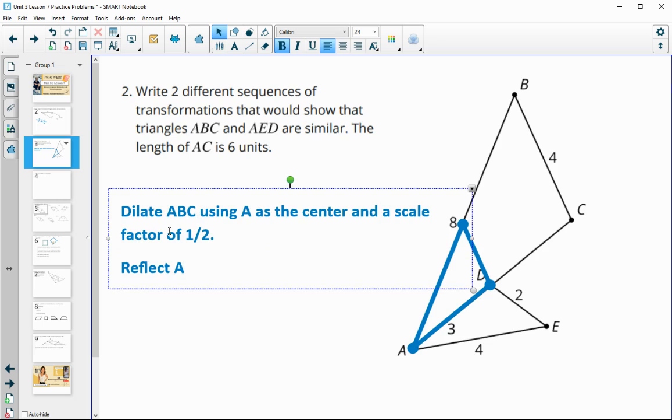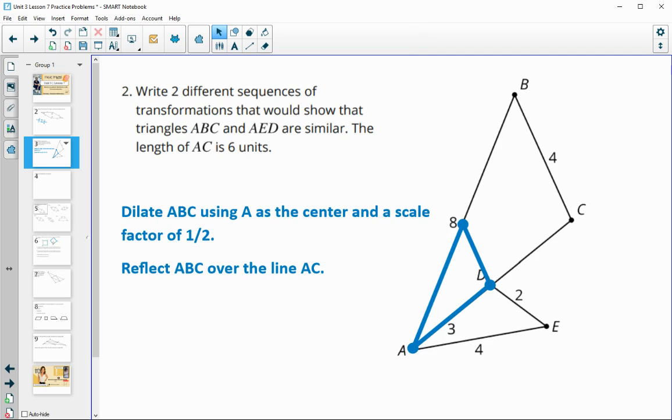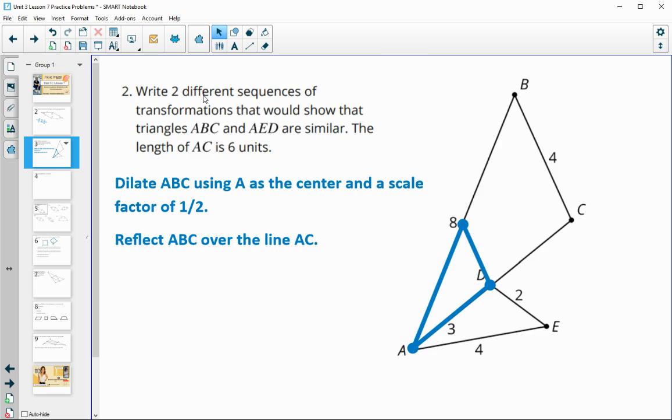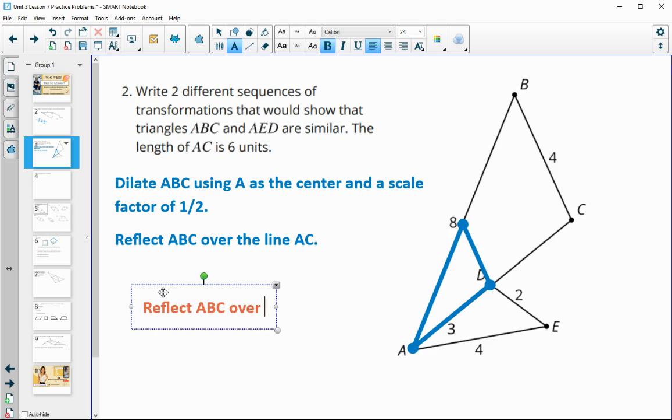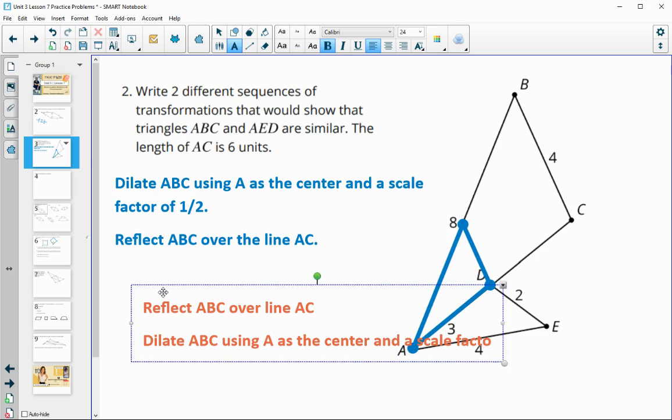So then reflect ABC over the line AC, and then that would send all of these vertices onto that other one. So that's one way you could do it. And then you just need to write two, so you could just do those backwards. So you could have reflected first, so we could have done reflect. You could either do these backward, like do a reflection: reflect ABC over line AC first, then do the dilation using A as the center and the scale factor of one-half.